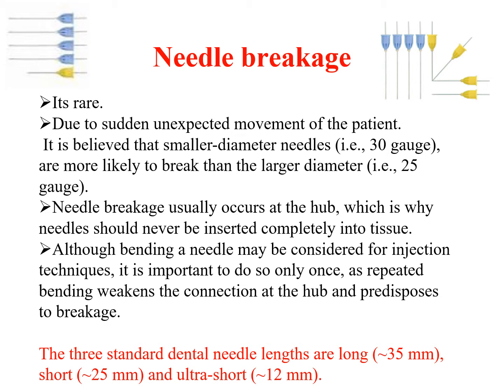Needle breakage usually occurs at the hub, which is why the needle should never be inserted completely into the soft tissue. Avoid bending the needle — this is important because when inserting the needle from one side for the inferior nerve block and then changing position to the other side, the chance of bending the needle increases, and that will lead to needle breakage.